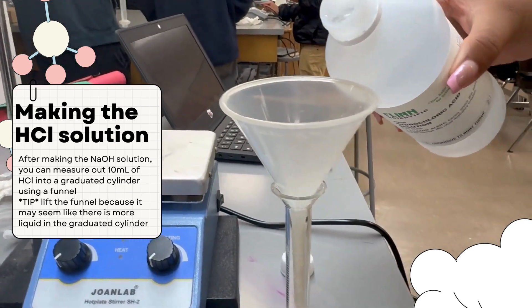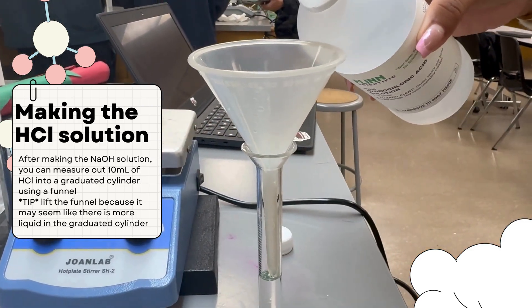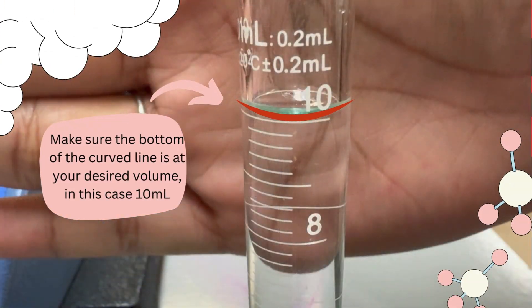For your HCl solution, you will need 10 milliliters of acid. Make sure the bottom of the curved line is at your desired volume, in this case 10 milliliters.